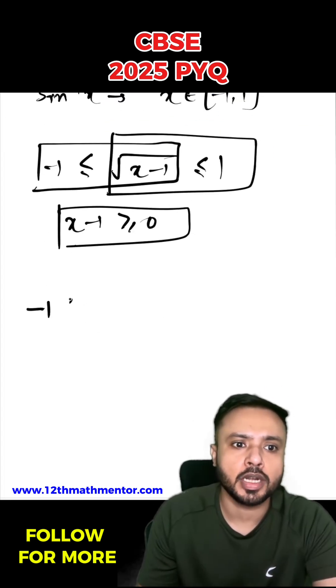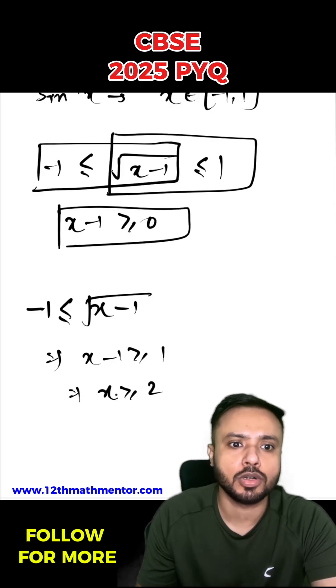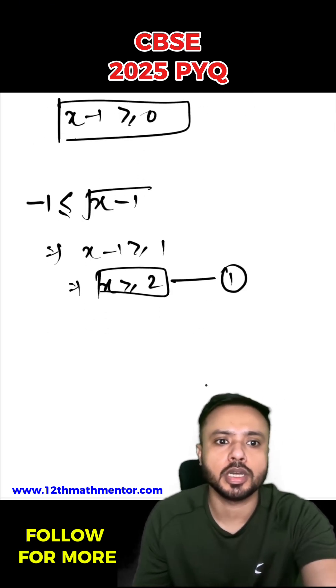For the first inequality: -1 ≤ √(x-1). Squaring both sides gives x-1 ≥ 1, which means x ≥ 2. This is our first inequality solution.